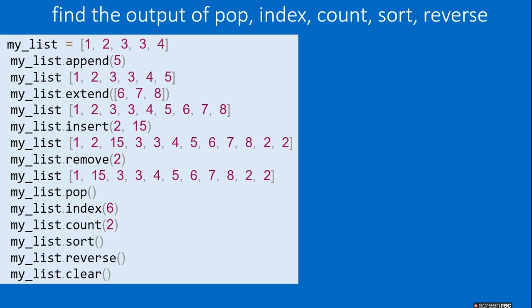Now remove(2) removes the first 2, so the list becomes [1,15,3,3,4,5,6,7,8,2,2]. You need to find my_list.pop(). Pop means the last element comes out. Then index(6): counting positions 0,1,2,3,4,5,6 — position 6 holds the value 6.